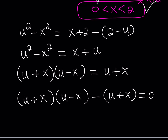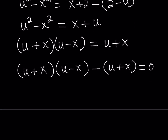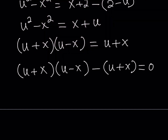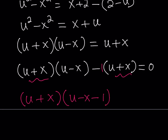Now I have u plus x as a common factor. I can factor out u plus x, and I should be getting u plus x times u minus x minus 1 equals 0. Notice we have u plus x on the outside, and the remaining term is considered 1 times u plus x, therefore it becomes u minus x minus 1.